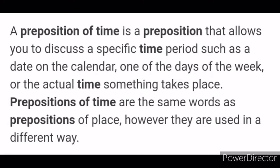Prepositions of time allow us to refer to any specific time period, such as a date on the calendar — it could be one of the days of the week or the actual time something takes place or is happening. Prepositions of time and prepositions of place are sometimes the same words. Don't get confused — they are used in a different way. You will get to know more clearly through the examples ahead.